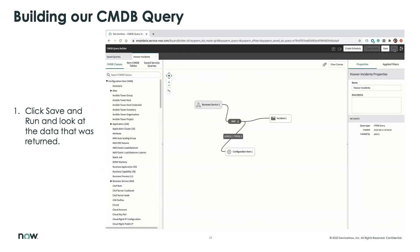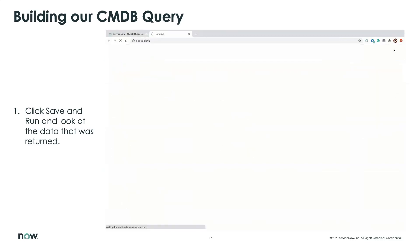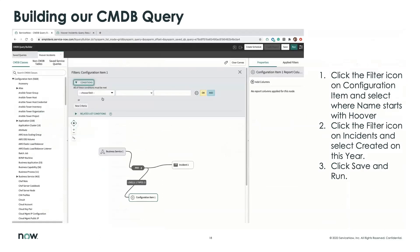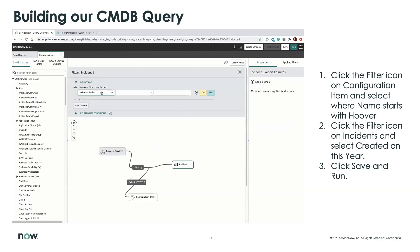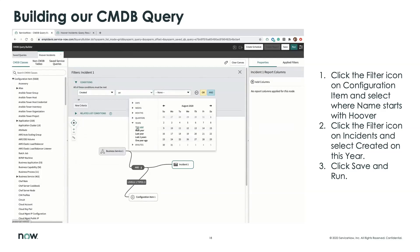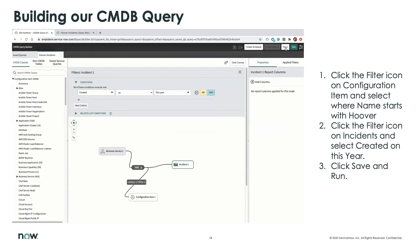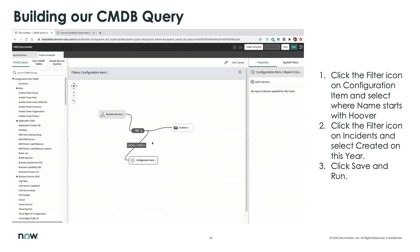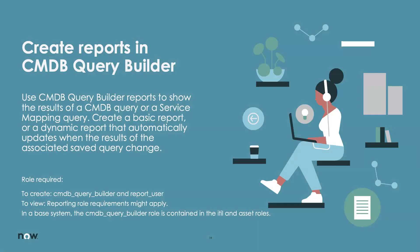Let's filter that down. We want to add a filter to the CI that looks for Hoover, and also look at incidents created this year. When you click on any one of the nodes, there is a familiar filter button. We're going to look for Name that starts with 'Hoover,' and also filter incidents created on this year. These filters are applied directly to the query. We click Save and Run again, and we've dwindled results down to 388 different results. Now that we think our query is the way we need it, let's build a report off of it.